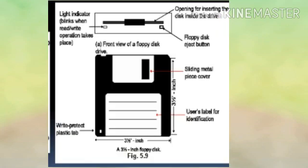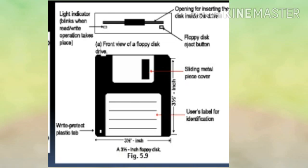The figure shows the diagram of a floppy disk. It features a read-write protect plastic tab, a usable label for identification, and a sliding metal piece cover. It is a 3.5 inch floppy disk.